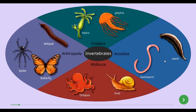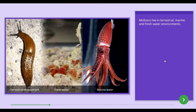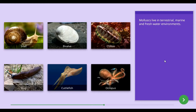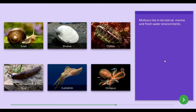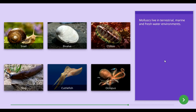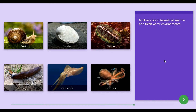We will now study about another invertebrate group: the Mollusca group. Molluscs successfully live in three types of environments, namely terrestrial, marine, and freshwater environments. Snail, bivalve, chiton, slug, cuttlefish, and octopus can be given as examples of animals belonging to the Mollusca group.